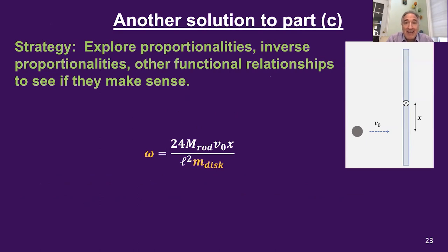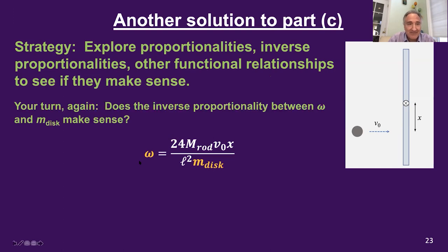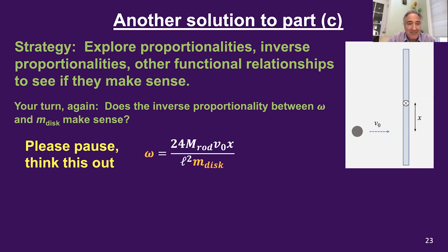That was one way to answer part C, but there are others. The proportionality with M-rod might not be the only thing wrong with the equation. What I'd like you to do now is investigate another functional relationship — specifically the inverse proportionality between omega and the mass of the disk. Does that inverse proportionality make sense? Please pause this lecture and think that out.